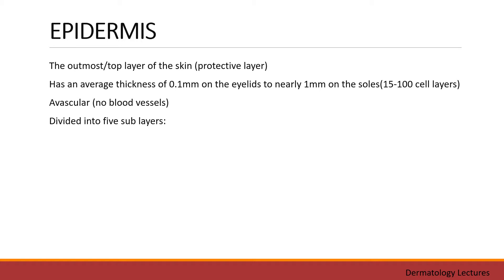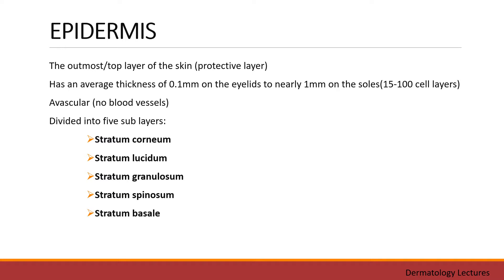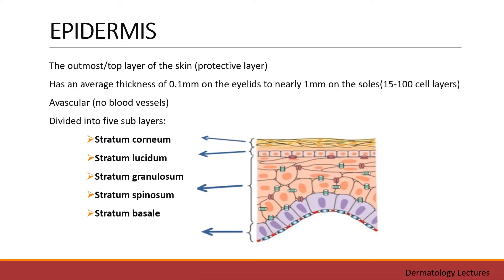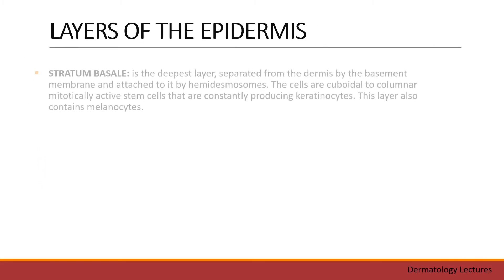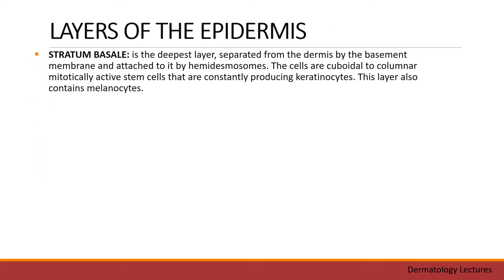Epidermis is the outermost top layer of the skin. It has an average thickness of 0.1 mm on the eyelids to nearly 1 mm on the soles. It is avascular and divided into five layers of the epidermis.